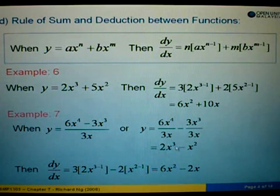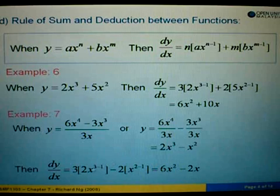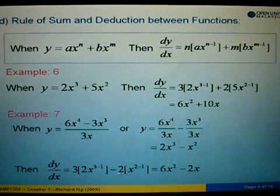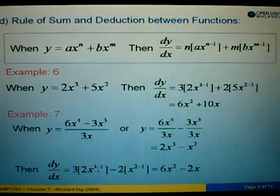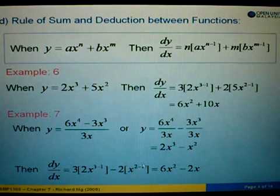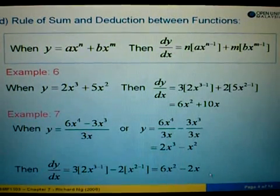To find dy/dx, we take out the 3, so 3 times 2x, and the power 3 minus 1. Since this is minus, we copy the minus again. On the right hand side, bring down the power 2: we have 2x to the power 2 minus 1. Simplify the left side: 3 minus 1 is 2, so x squared times 2 times 3 equals 6, giving 6x squared. Minus, and on the right hand side, 2 minus 1 equals 1, so 1x to the power 1 times 2 is written as 2x. So the answer for example 7 is 6x squared minus 2x.